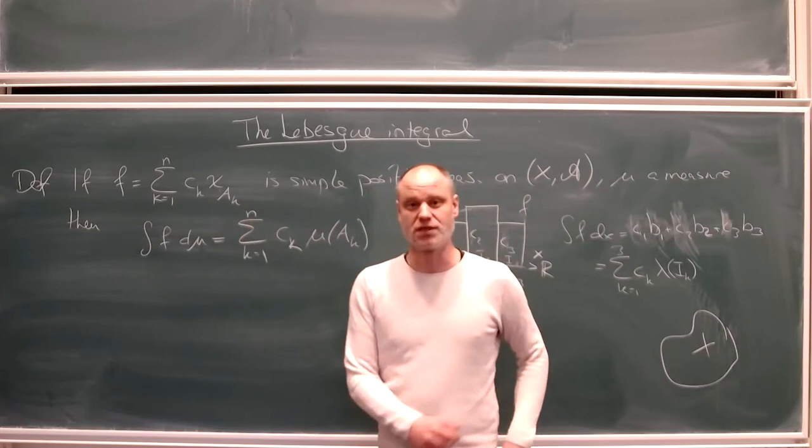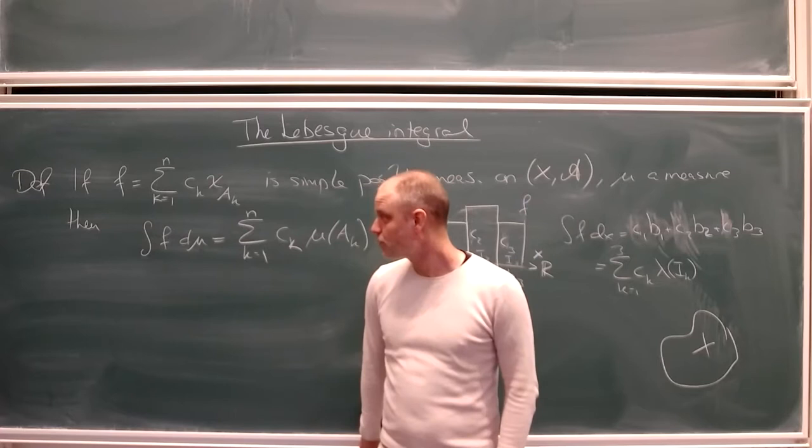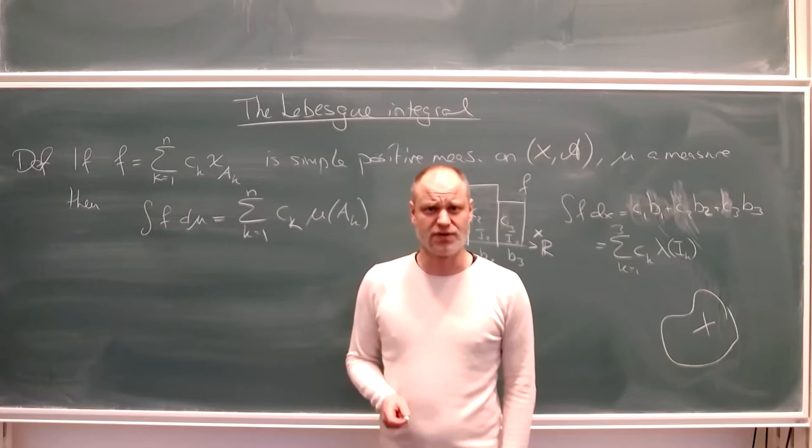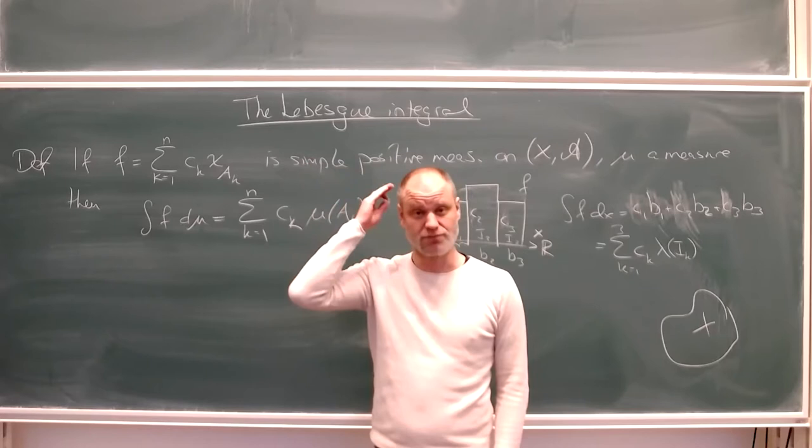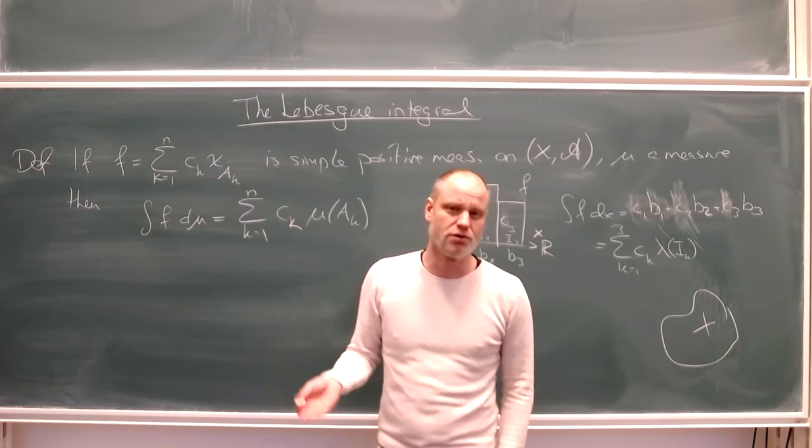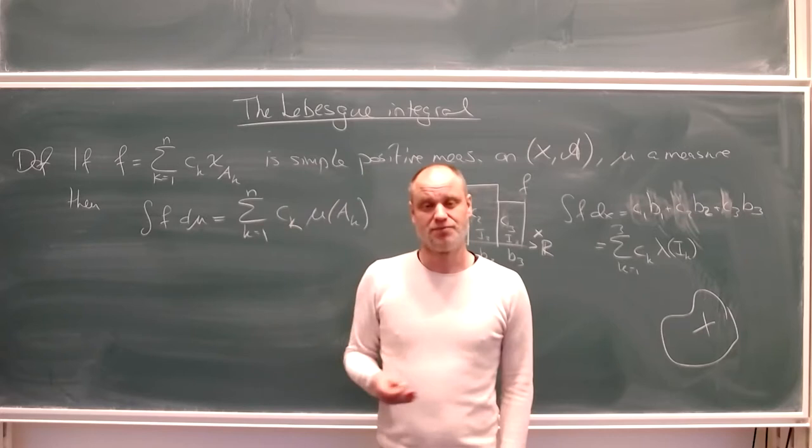So we can integrate simple functions, but that's not very satisfactory. We want to get to any measurable function, and that's when you need to remember the theory from last lecture, which says that any time you have a positive or non-negative measurable function, you can write it as a limit of an increasing sequence of simple functions.